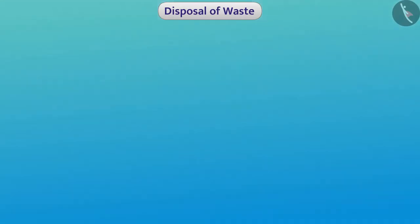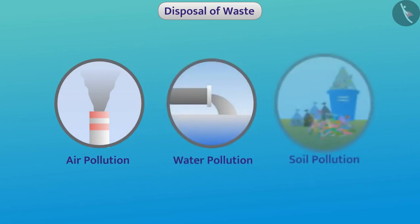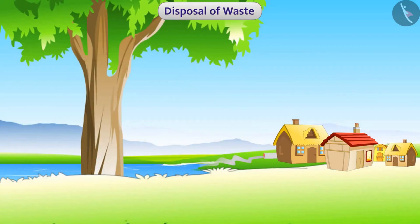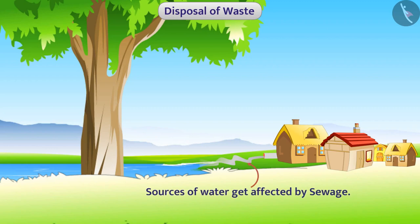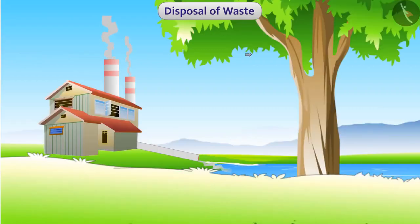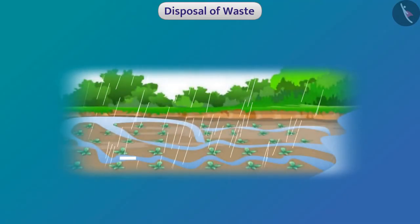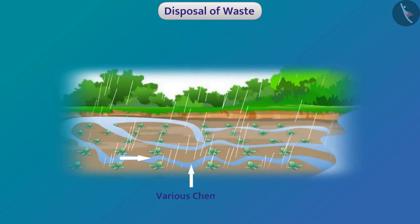Both factors also cause air, water, and soil pollution. Because of lack of proper methods of disposal of sewage, local reservoirs and other sources of water get affected. Waste from industries — including gas, garbage, salts of metals, and liquid waste — are released into the environment without treatment. Water from agricultural lands that contains various chemicals is often collected into local reservoirs, all of which cause water pollution.